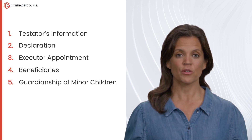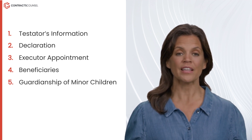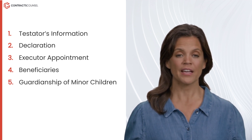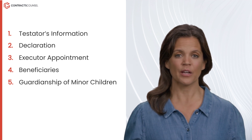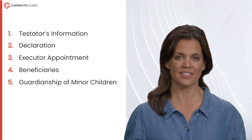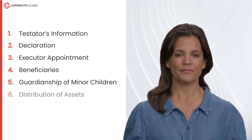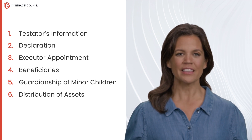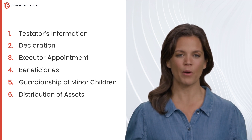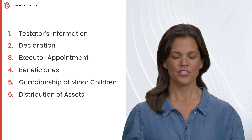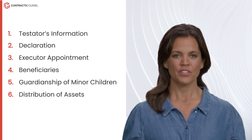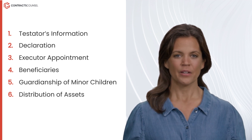Five, guardianship of minor children: if applicable, appoints guardians for any minor children, ensuring their care according to the testator's wishes. Six, distribution of assets: details how specific assets, property, or funds are to be distributed to beneficiaries, clarifying each allocation.